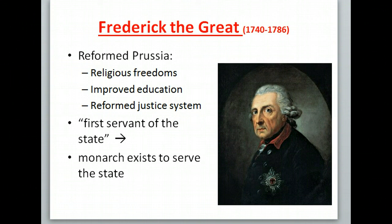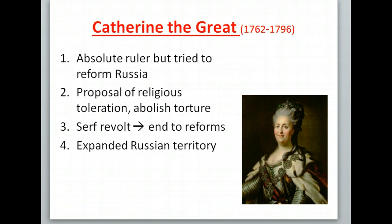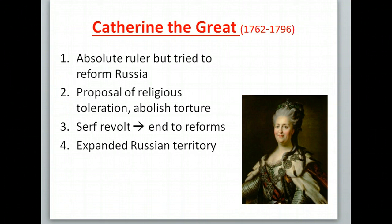Catherine the Great is from Russia and comes after Peter the Great. She's an absolute ruler but tries to reform things. She reads Voltaire and Locke — a very well-read woman. She proposes religious toleration, accepting Jews and Catholics since Russia is Orthodox, and proposes to abolish torture. However, Russia still has serfs — peasants tied to the land who cannot leave. When the serfs revolt, she shuts down every idea of reform. Because of this, she tries to be an enlightened monarch and succeeds in some parts, but becomes much more of an absolute ruler in the end. She also expands Russian territory across Asia, far beyond where Peter the Great was centered around Moscow.